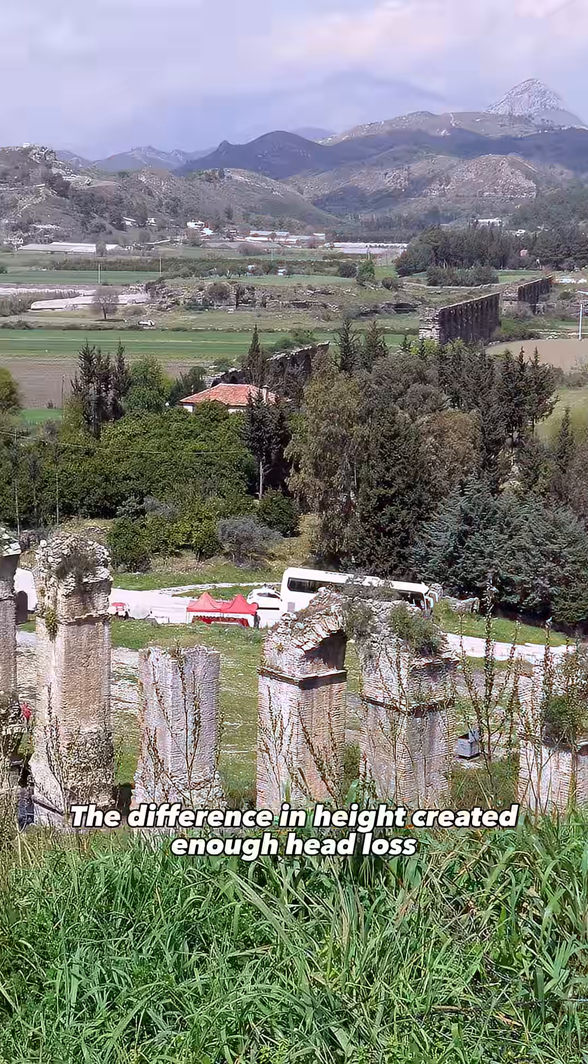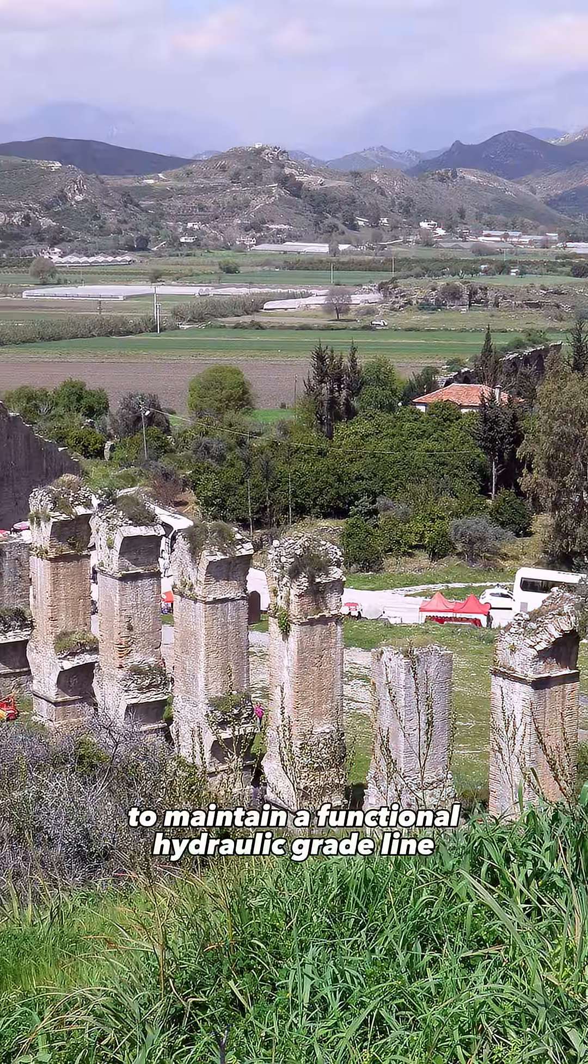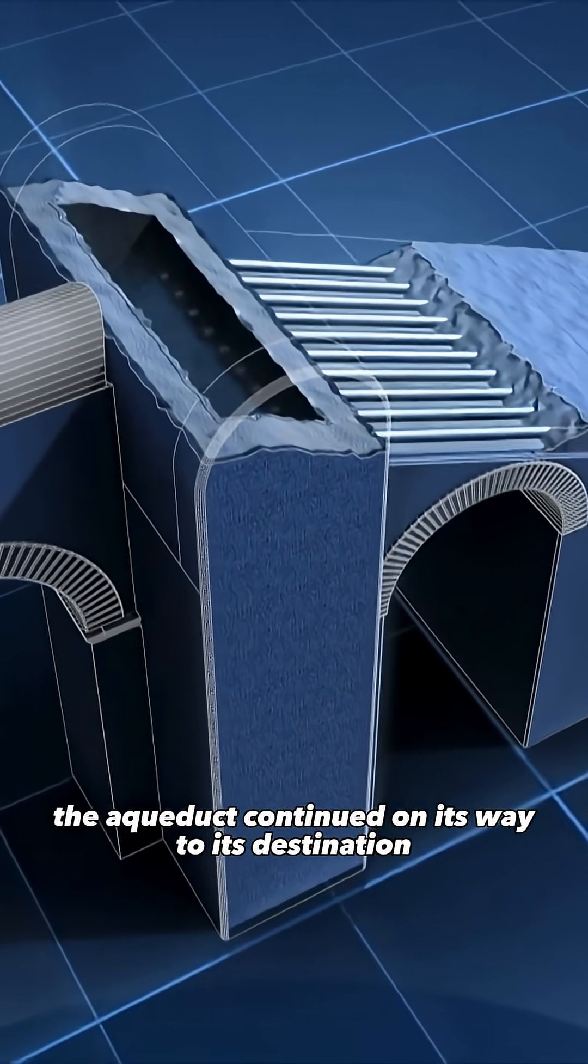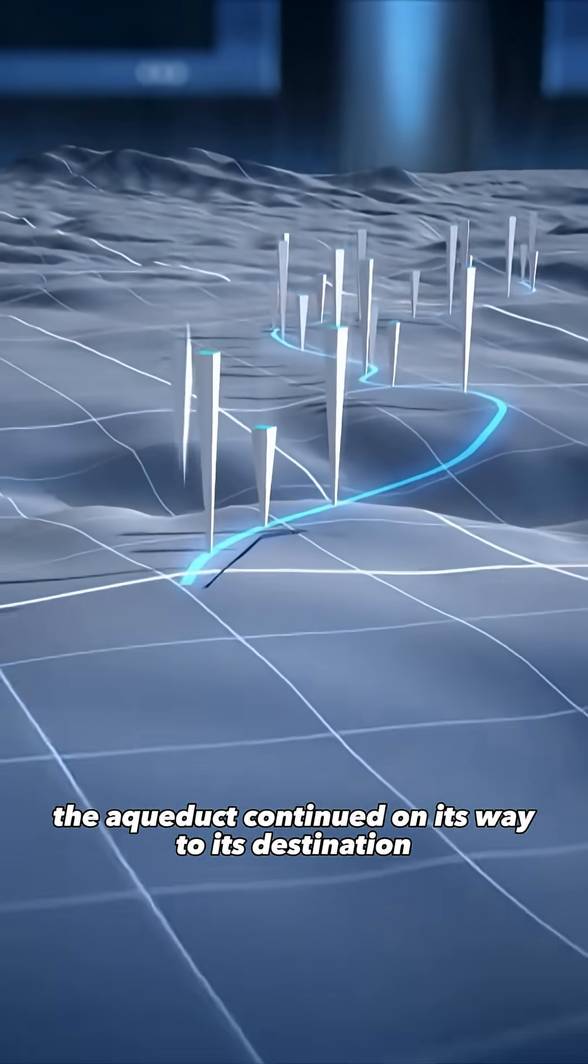The difference in height created enough head loss to maintain a functional hydraulic grade line. Once past the receiving tank, the aqueduct continued on its way to its destination.